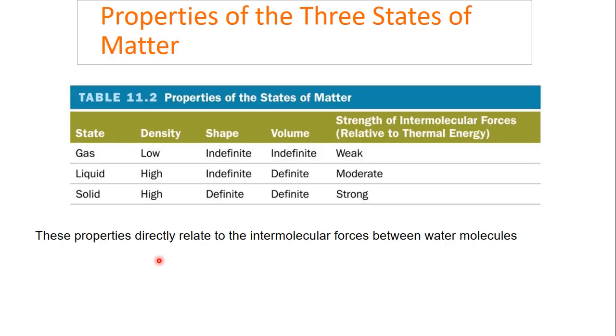Now let's look at some other properties of these three states of water. Both gas and liquid don't have a defined shape while a solid does. Gas does not have a defined volume while liquid and solid does. All of these relate to what are called intermolecular forces, or the forces between molecules. Weak intermolecular forces lead to low density and indefinite shape and volume, while strong molecular forces lead to high density and definite shape and volume.